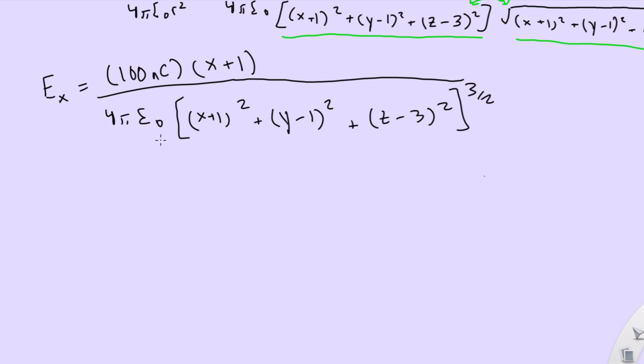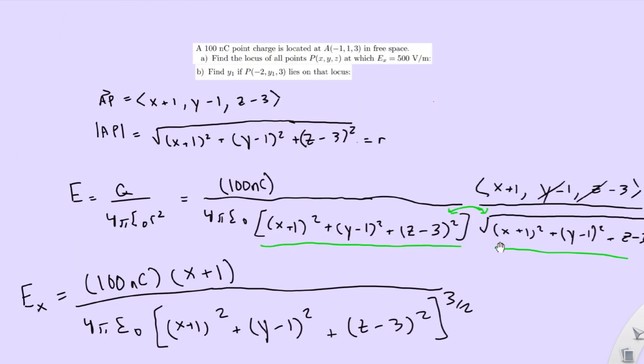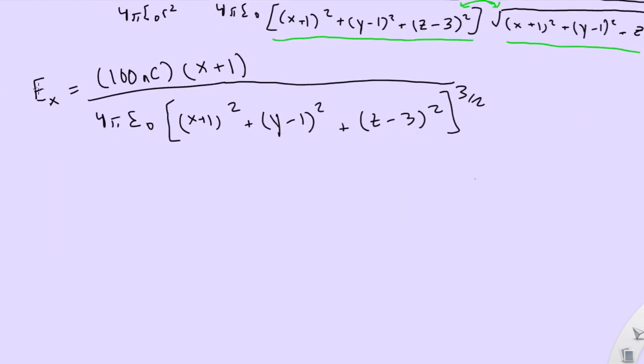Okay, so we take the x-component, and we notice this is going to be equal to 500, because that's what we want. We want it to be equal to 500. So we could change this right here, this is going to be 500. So 500 equals this baloney right here.